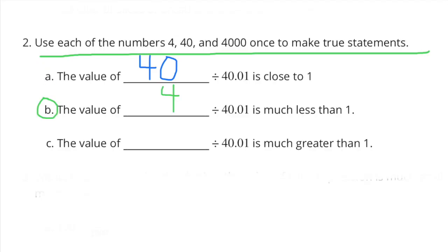B: the value of 4 divided by 40 is much less than 1. This is true because the value of the dividend is much less than the value of the divisor.